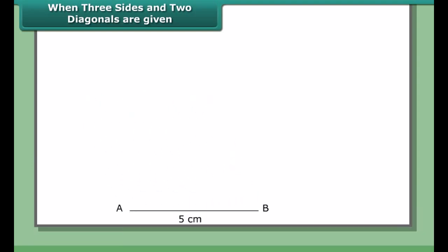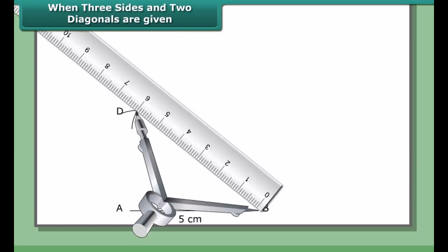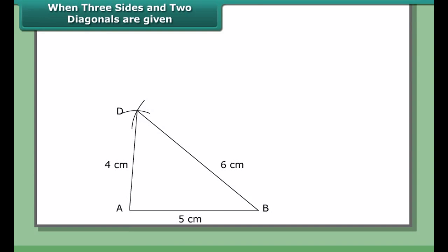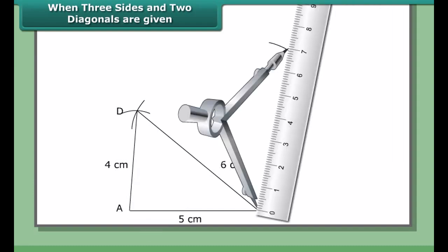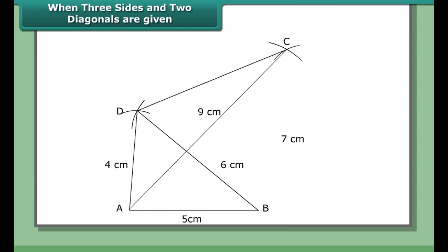Draw AB equal to 5 cm. With A and B as centers and 4 cm and 6 cm as radii respectively, draw arcs to cut each other at point D. Join AD and BD. With A and B as centers and 9 cm and 7 cm as radii respectively, draw arcs to cut each other at C. Join AC and BC. Join also DC. ABCD is the required quadrilateral.